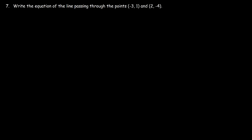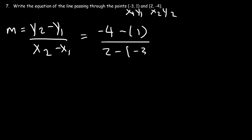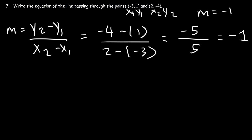Number seven: write the equation of the line passing through the points (-3, 1) and (2, -4). First, calculate the slope: y2 minus y1 over x2 minus x1. With x1 = -3, y1 = 1, x2 = 2, y2 = -4: negative 4 minus 1 is negative 5, and 2 minus negative 3 is 2 plus 3 which is 5. So negative 5 divided by 5 is negative 1 — the slope is -1.